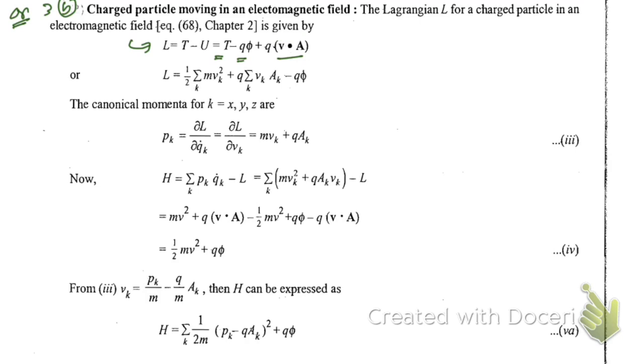Now you see here, what do you mean by phi and A? You have already studied in electromagnetism that electric field E can be expressed as negative gradient phi minus del A by del t, and magnetic field can be represented as curl of A vector. So here, phi is equal to electromagnetic scalar potential, and vector A is electromagnetic vector potential. Hope you know these things.